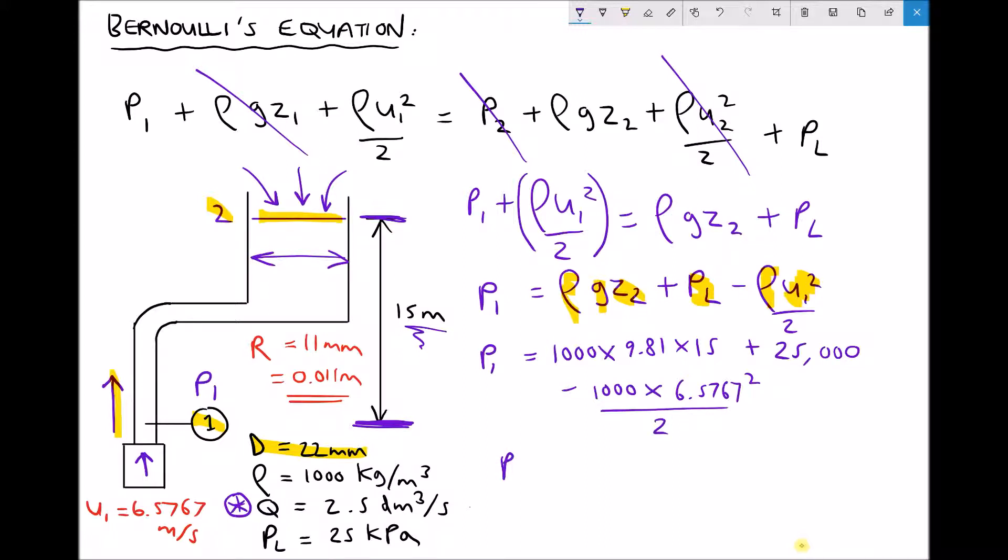Now running that all through the calculator gives us a pressure at the gauge at position one equal to 150,524, or let's convert that to kilopascals, 150.5 kilopascals. So the pressure measured at the gauge at position one equals 150.5 kilopascals.